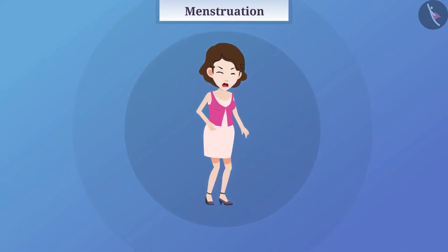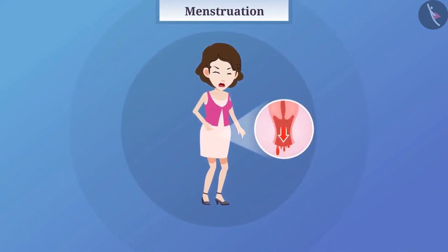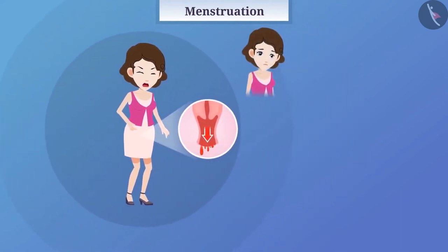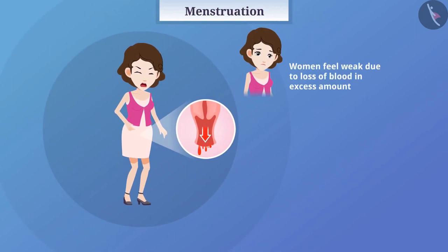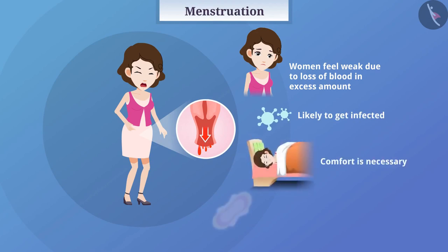A woman has a lot of pain during menstruation. Due to loss of blood in excess amount, women also feel weak. Women are more likely to get infected during this period. Therefore, during this period, comfort and personal hygiene are necessary.